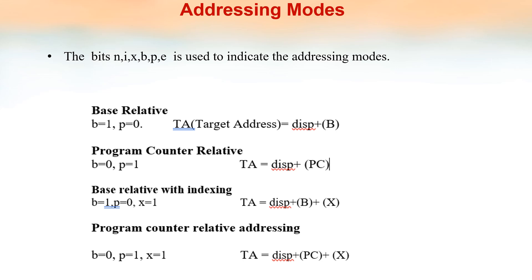Addressing modes are identified using the bits N, I, X, B, P, E. First, base relative addressing mode — this means bit B equals 1 and P equals 0 in the instruction. The target address is calculated as: displacement plus the content of the base register. The target address is where the operand resides in memory, and the operand value is fetched from that address.